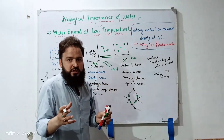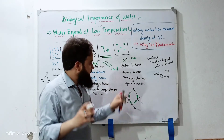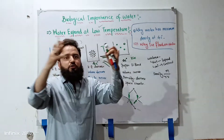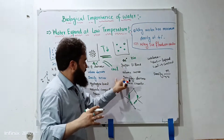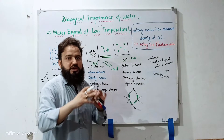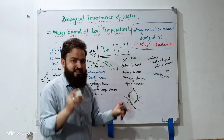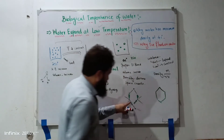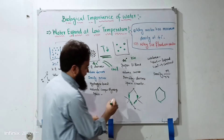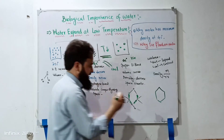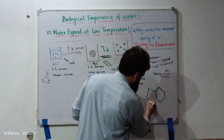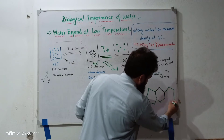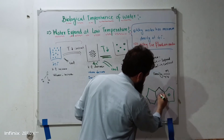Volume increases. If the water molecules increase in spacing, the volume increases. Then the density decreases. If density decreases, the space is different. If the hydrogen bond arrangement is different, it forms a hexagonal shape. This shape is hexagonal, but it has gaps.